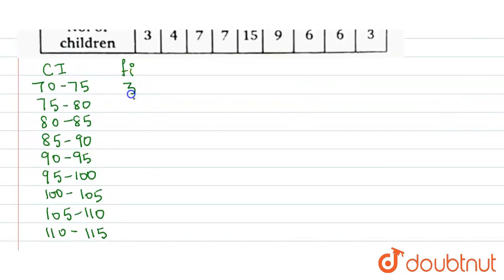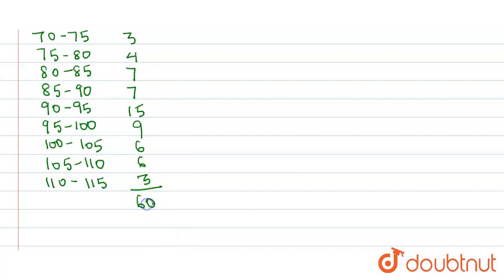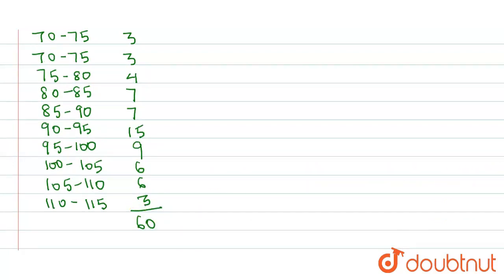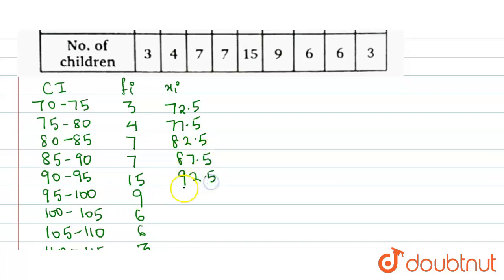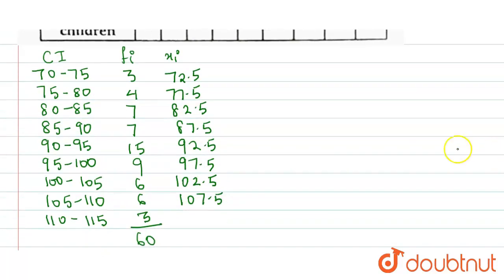The corresponding frequencies given to us are 3, 4, 7, 7, 15, 9, 6, 6, and the last is 3. The sum of frequencies equals 60. Now to find the mean, we calculate the class mark or mid values — the average of upper and lower limits — giving: 72.5, 77.5, 82.5, 87.5, 92.5, 97.5, 102.5, 107.5, and 112.5.